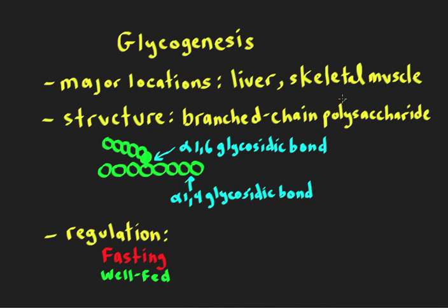For skeletal muscle, the glycogen there is not to help provide glucose to the blood, but rather to provide glucose molecules that can go into the glycolytic pathway and provide a source of ATP for skeletal muscle contraction. So the skeletal muscle is quite selfish with respect to glycogen, and the liver is mostly there to help out the rest of the body during periods of fasting.